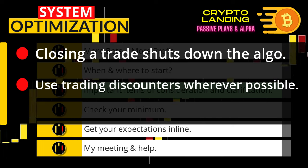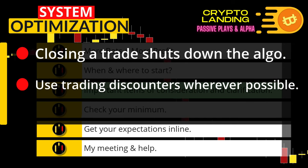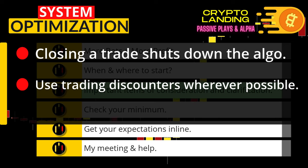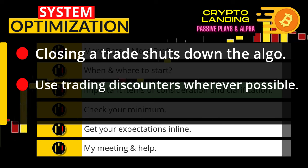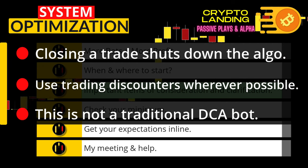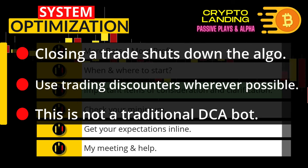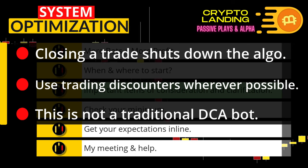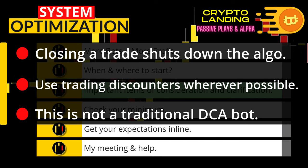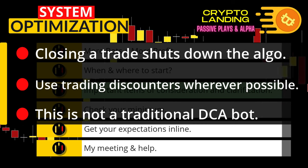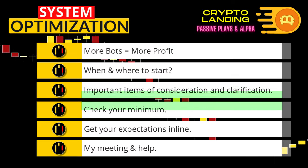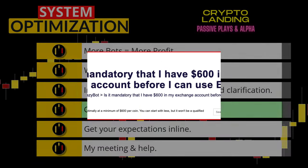Third, take advantage of trading discounts. For example, on Binance you can pay your fees in BNB to receive a 25% discount on trading fees. Finally, and I have to mention this because so many YouTubers are getting it wrong: EasyBot is not an accumulation dollar cost averaging bot. The DCA feature of the bot is used to create USDT profits — it does not DCA coins for the purpose of long-term holding.